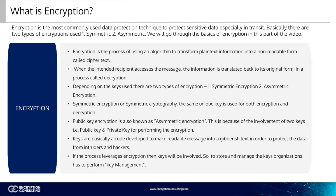Depending on the keys used, there are two types of encryption. One, symmetric encryption. Two, asymmetric encryption. Symmetric encryption, or symmetric cryptography, uses the same unique key for both encryption and decryption. Public key encryption is also known as asymmetric encryption, because of the involvement of two keys — the public key and private key — performing the encryption. Keys are basically a code developed to make readable messages into gibberish text in order to protect that data from intruders or hackers.